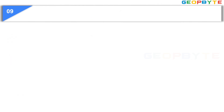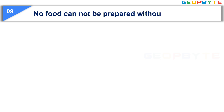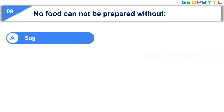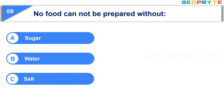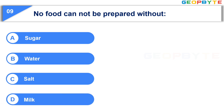The ninth question is: No food cannot be prepared without. Option A, Sugar. Option B, Water. Option C, Salt. Option D, Milk. Your time starts now.